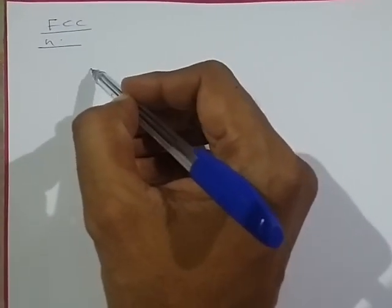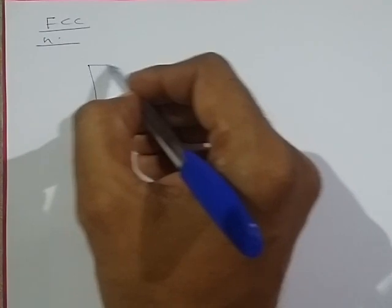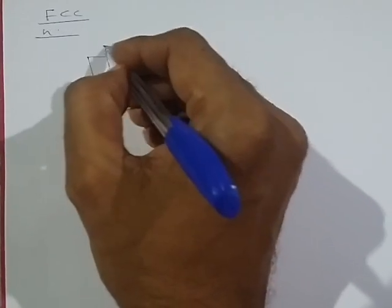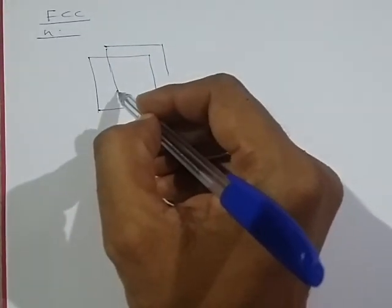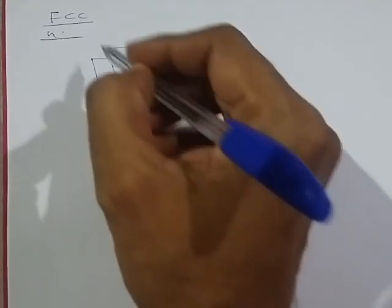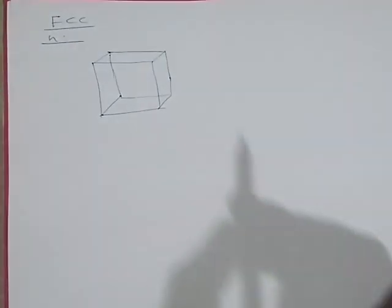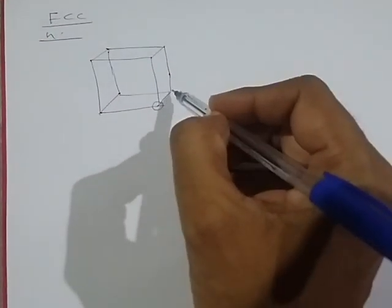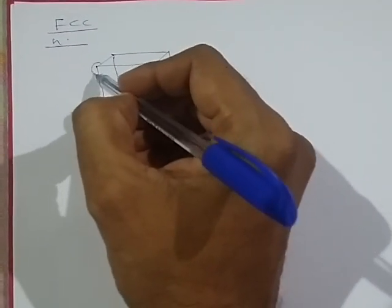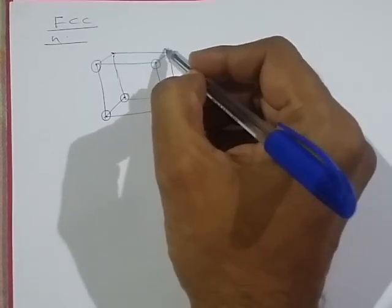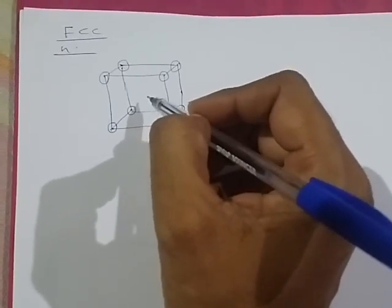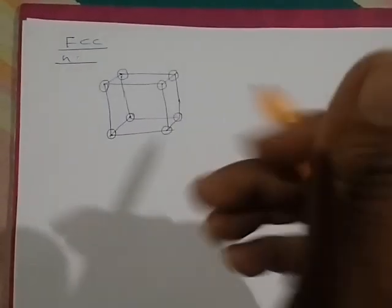The first parameter is the number of atoms per unit cell, meaning the number of atoms available within the structure. In this cubical structure, every atom is present. The corner atoms form a simple cubic structure, the inner part contains the body center atom, and there is also the face center type.